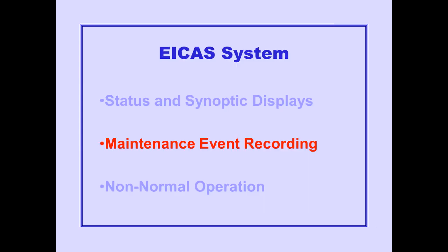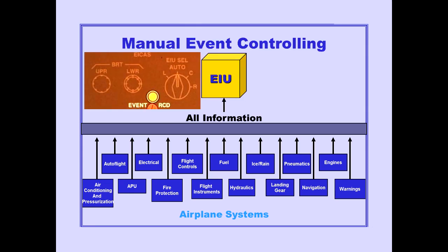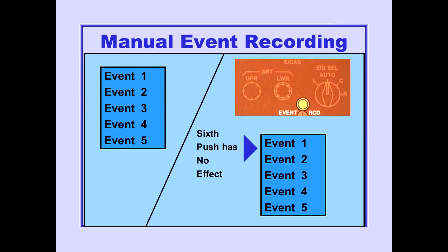Now let's look at the maintenance event recording function of the ICAST. Automatic event recording occurs whenever a non-normal condition is detected by an EIU, and information on that condition is stored in EIU memory. Manual event recording is also available: pushing the event record switch on the ICAST control panel records all information available to the EIU. Up to five events may be recorded manually; pushing the event record switch a sixth time has no effect.